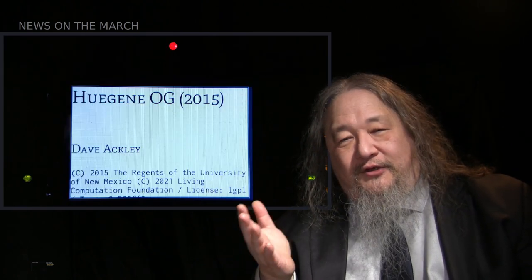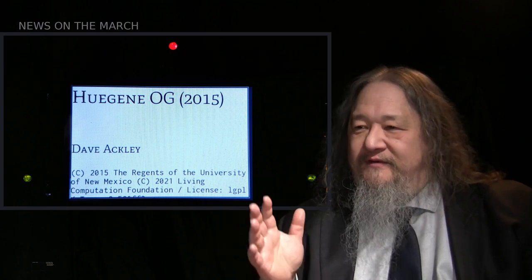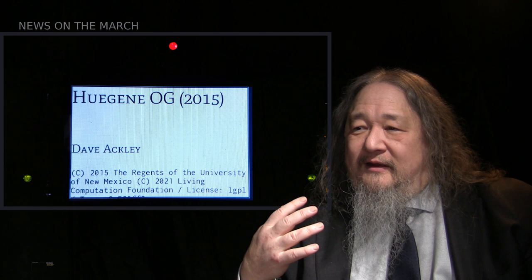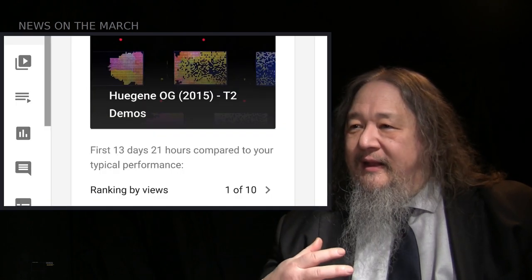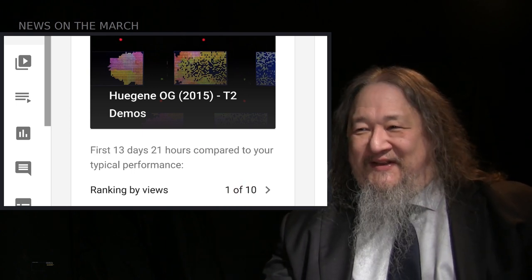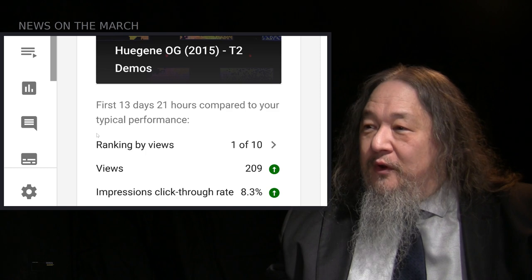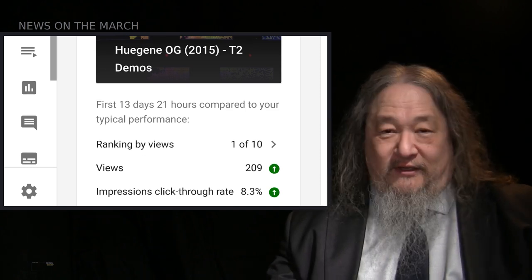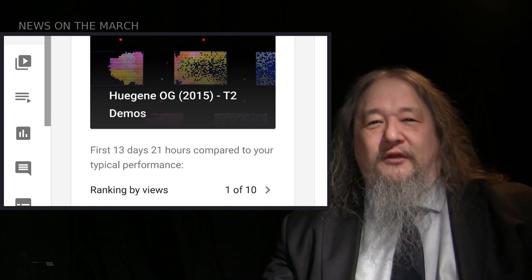I put up Hugene, the ancient co-evolutionary simulation from 2003, now transferred to the tile. It really looked pretty good, and it was fun to see it going again. It's done fairly well by T2 Tile project standards — doing number one is like 200 views or something like that, but an 8% click-through rate — apparently you need to get 20% to actually hit the big time.